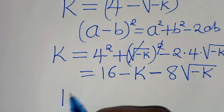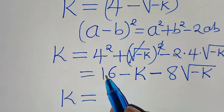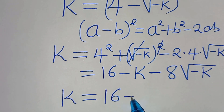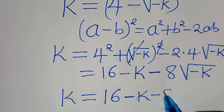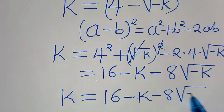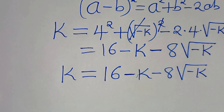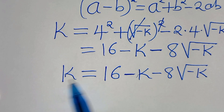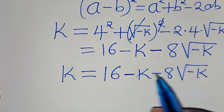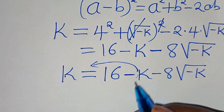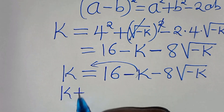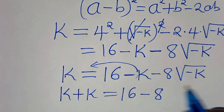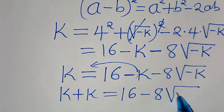So we have 16 minus k minus 8 times the square root of minus k. We have k on the left hand side and minus k on the right hand side, so let's take minus k to the left hand side, so that we have k plus k equals 16 minus 8 times the square root of minus k.